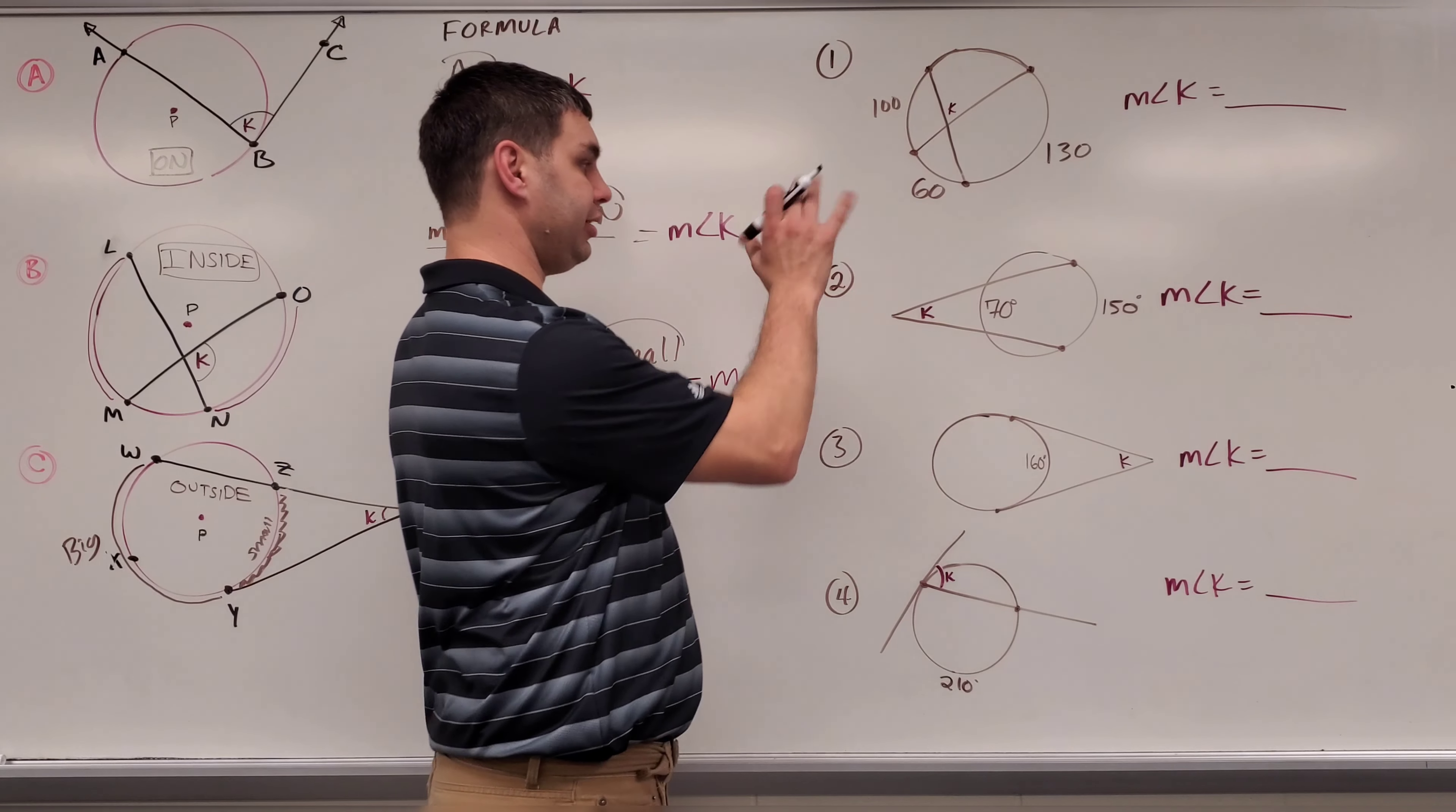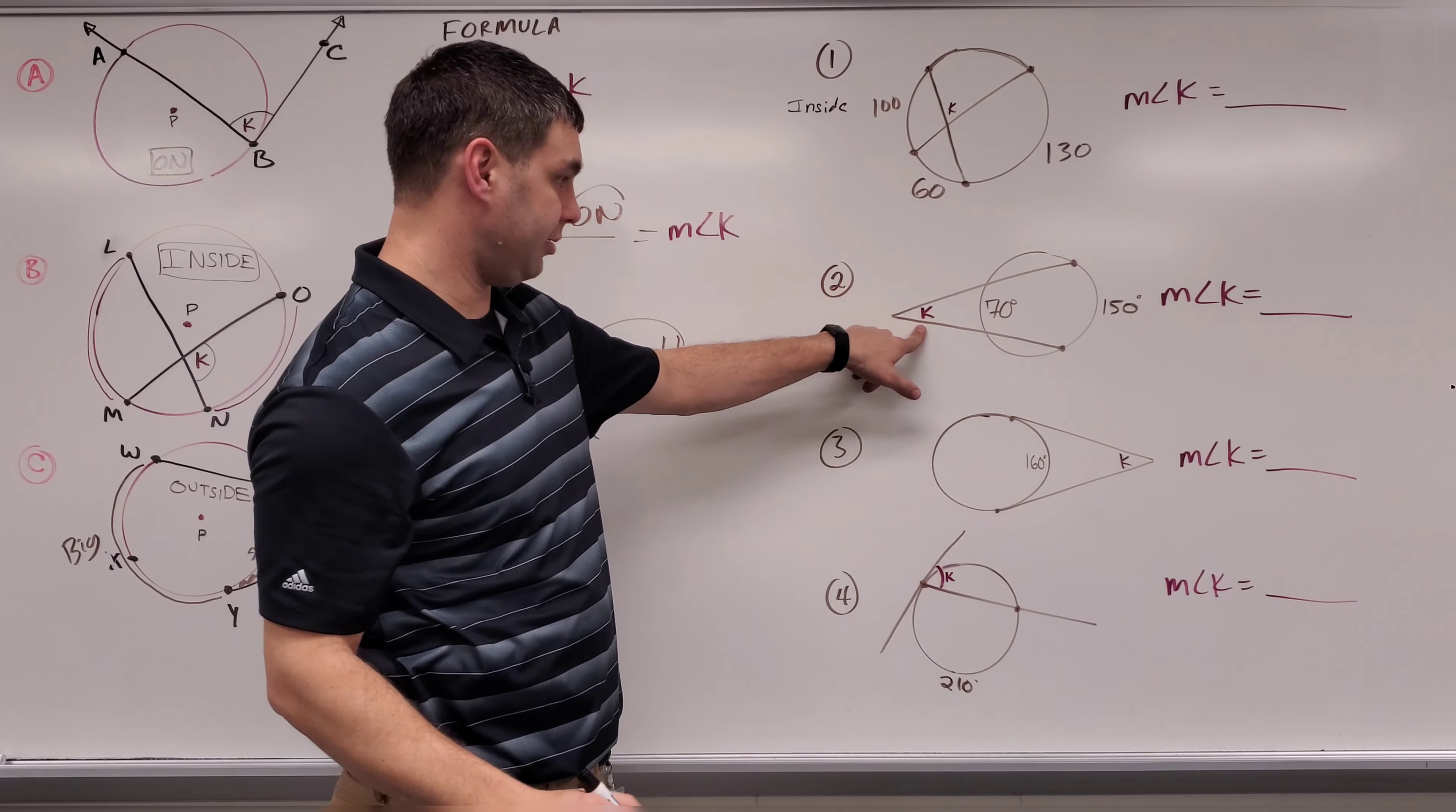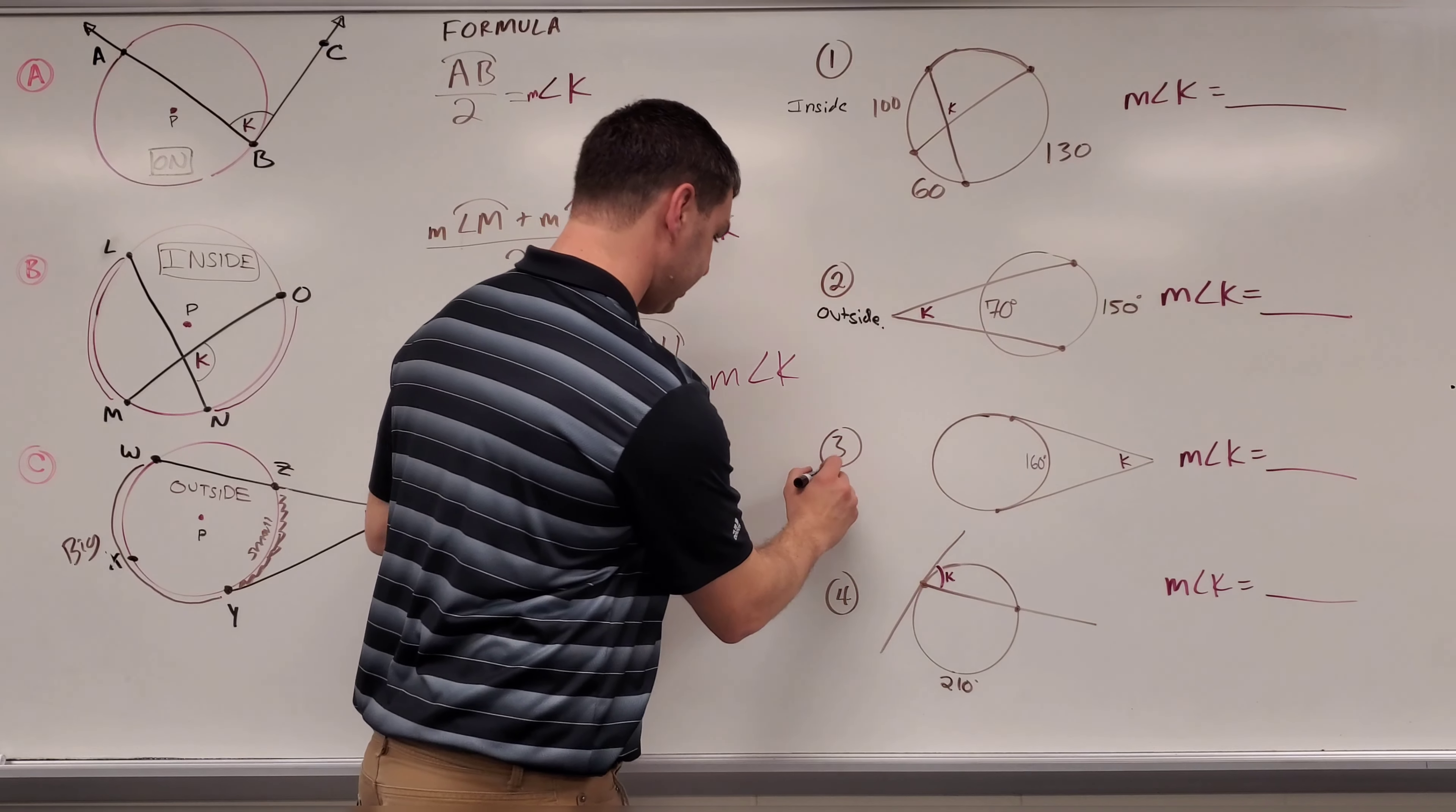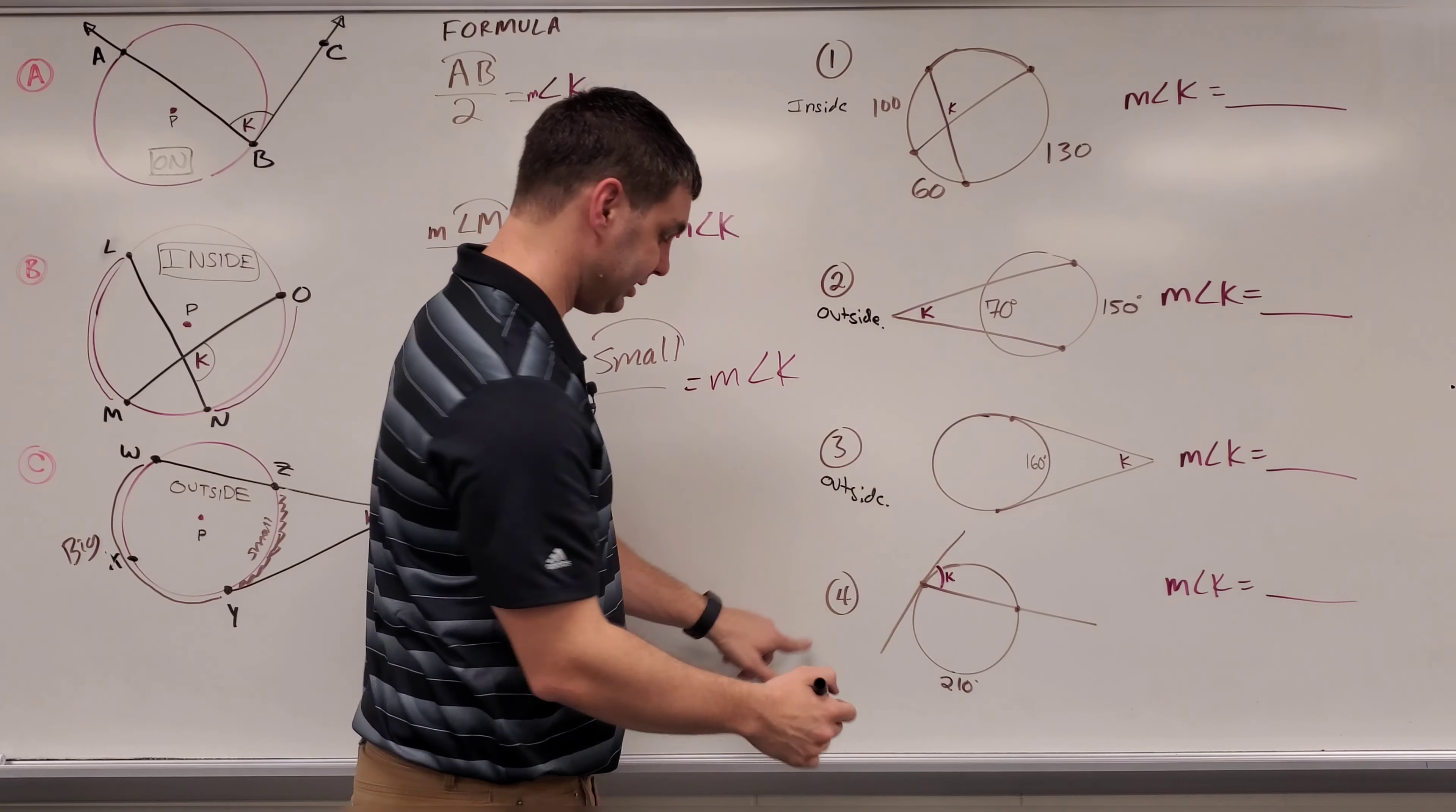Let's first maybe go through and say whether it's on, inside, or outside, and then we'll work with the problems after that. This one, the angle it's looking for is inside the circle. This next one is outside the entire circle. This one, again, is outside the circle, that's where angle K is. And the last one, angle K is right on the circle. Remember we talked in the last video that it's all dependent on where that vertex of the angle is.